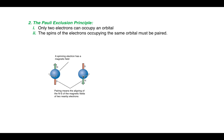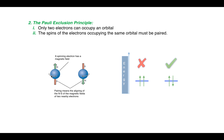If two electrons are to reside inside the same atomic orbital, they must have opposite spins. Pairing means that the alignment of the north and south poles of these two electrons must occur. So if we have two electrons to be filled within one orbital, they must be placed with opposite spins — they cannot have the same spin in the same orbital.